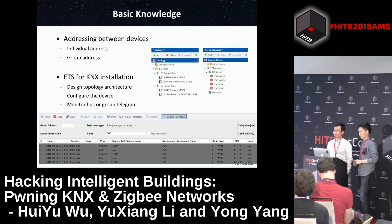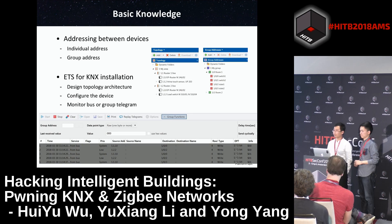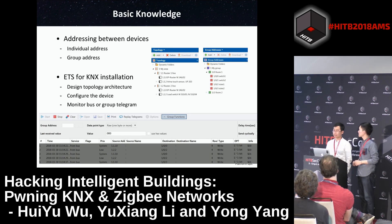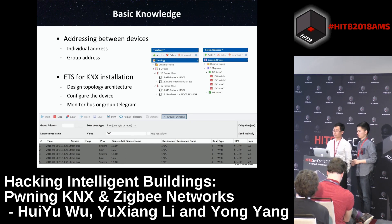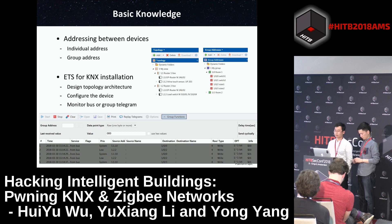Addressing between KNX devices involves two object types: individual address and group address. The individual address is used to construct the network topology; every KNX device has a unique address consisting of three numbers separated by dots, representing the area, line, and device number. The group address is used to define the functions of the KNX network. For example, if a button is pressed, data is sent and all devices bound to the group address will respond by switching on or off. Developers use ETS software for KNX installation, including designing topology architecture, configuring devices, and monitoring bus or group telegrams.